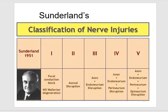There is another classification — Sunderland's classification (1951): Grade 1 is focal conduction block with no Wallerian degeneration; Grade 2 is axonal disruption; Grade 3 is axon plus endoneurium disruption; Grade 4 is axon plus endoneurium plus perineurium disruption; and Grade 5 is axon plus endoneurium plus perineurium plus epineurium disruption.